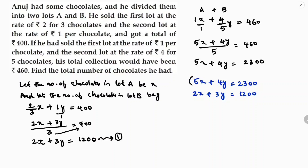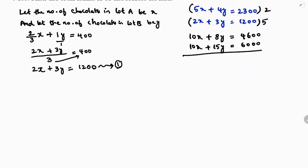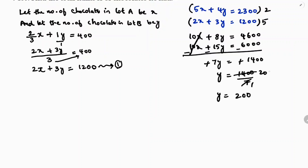Now solving both equations: I will multiply the second equation by 2, giving 10x + 8y = 4600, and multiply the first equation by 5, giving 10x + 15y = 6000. Subtracting: 8y minus 15y gives minus 7y, and 4600 minus 6000 gives minus 1400. The negatives cancel, so y = 1400 by 7 = 200.